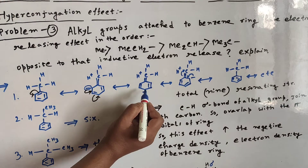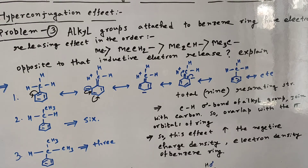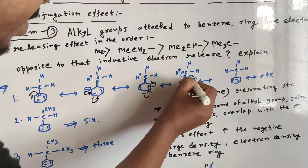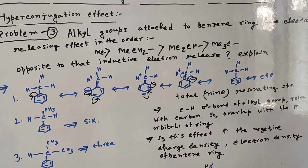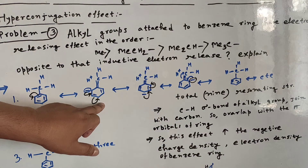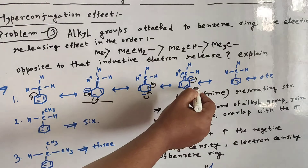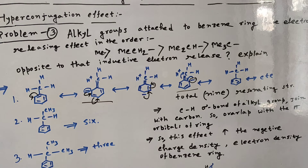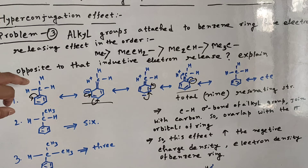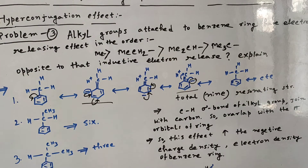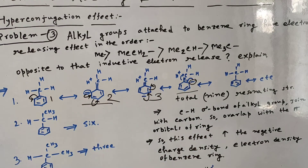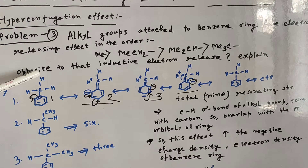When this negative charge participates in delocalization, the minus charge forms at this position, giving resonance structures. These structures remain equivalent, so we get a total of three resonance structures per hyperconjugable hydrogen. Since methyl has three hydrogens, it gives a total of nine hyperconjugable resonating structures.